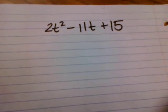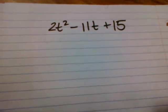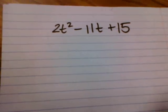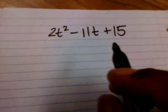All right, we're going to factor out this trinomial. The first thing we need to do is make sure there are no greatest common factors throughout any of those. 2, 11, and 15 do not have common factors. So to do this, I am going to use grouping.